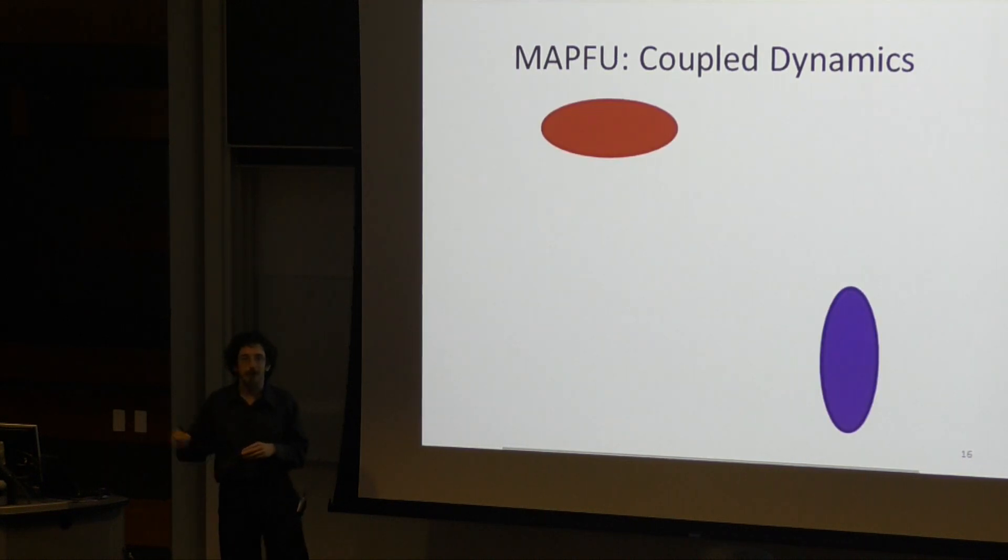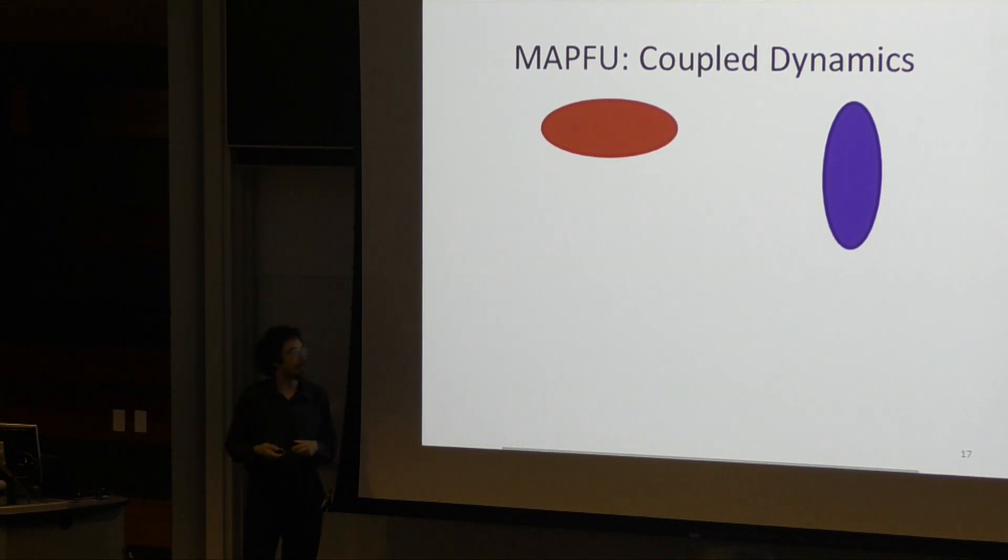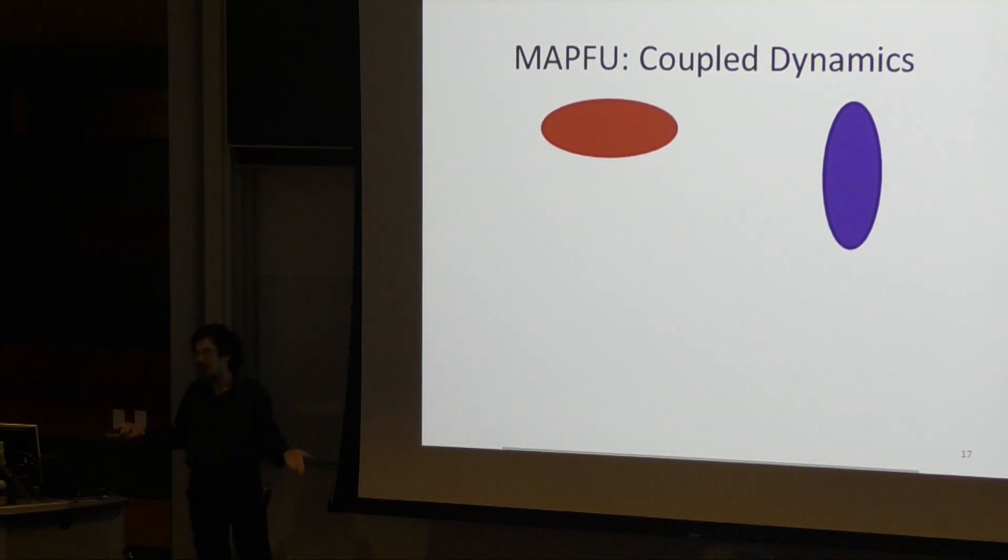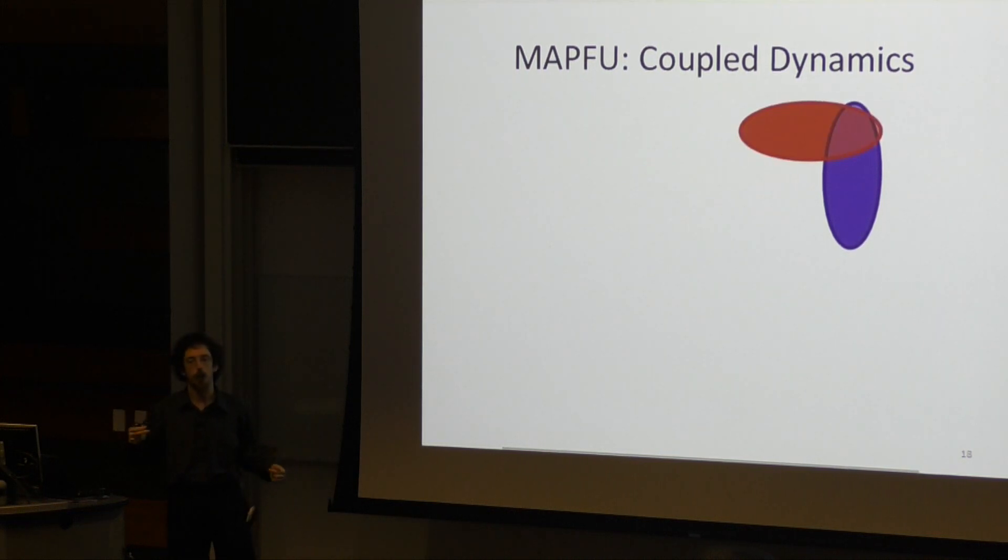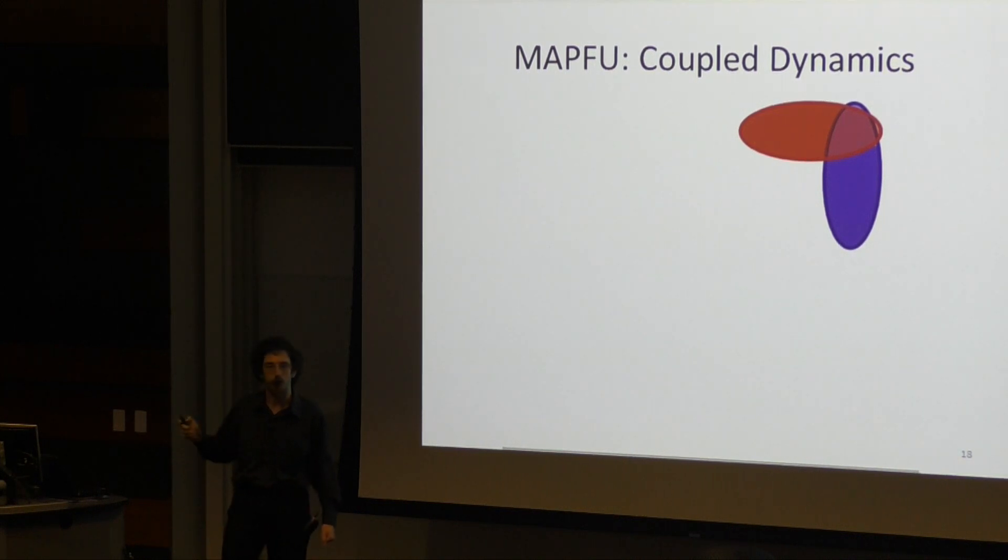Partly as a result, the dynamics of the system are now coupled. We have replaced the configuration of the robot, a single point, with a belief distribution as to where that robot is. Now, in this example, if one robot moves, it looks like a standard MAPF problem. We've just got a bit of translation. But when we change what that second robot does, we have now actually changed the belief distribution for the first robot.